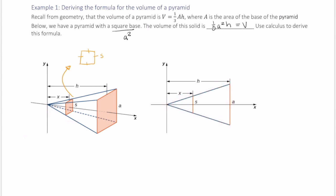So let's use similar triangles in order to figure this out. We know that s is to x what a is to h. And solving, we end up with the side of this square, s, is equal to ax over h.